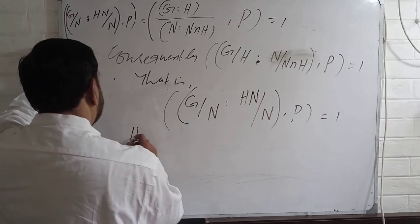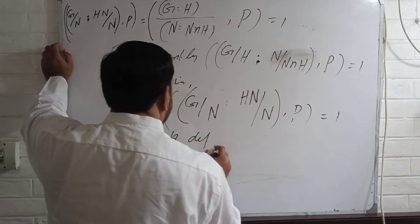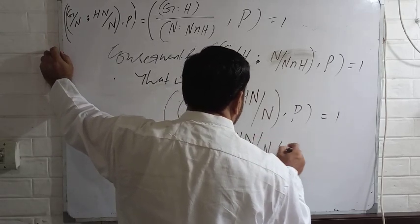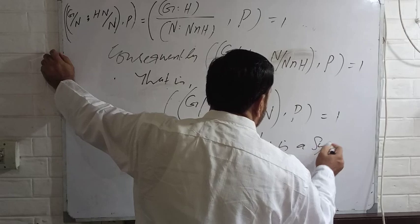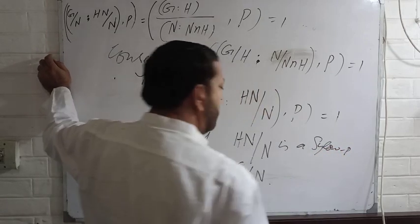hence by definition, HN by N is a Sylow P in G by N.